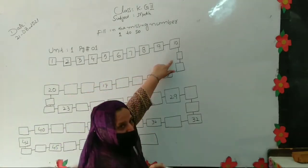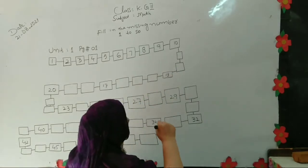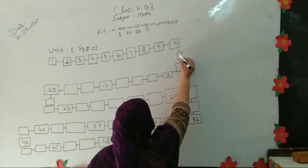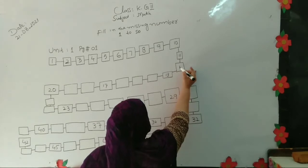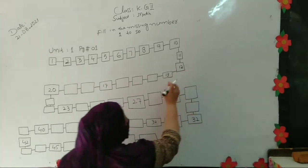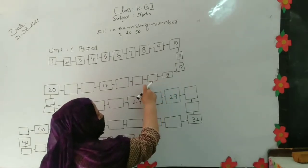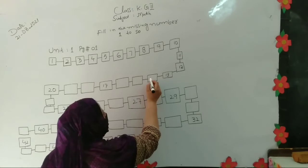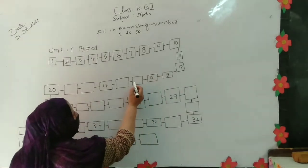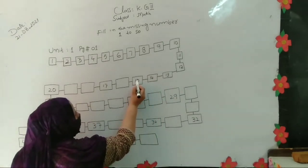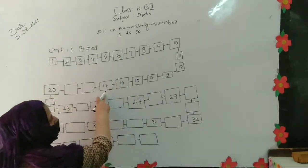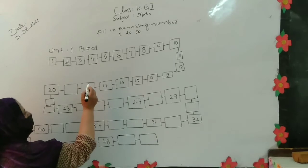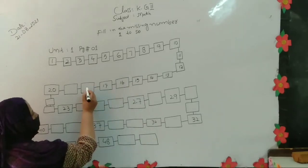After 10, the counting continues. After 10 the next number is 11. After 11 the next number is 12. Then we write 13. After 13 the next number is 14. After 14 the next number is 15. After 15 the next number is 16. In the same way we will go forward to 17. The next number after 17 is 18.